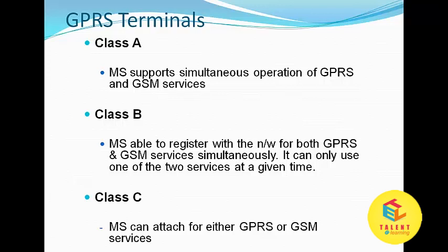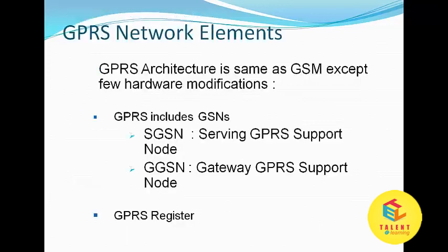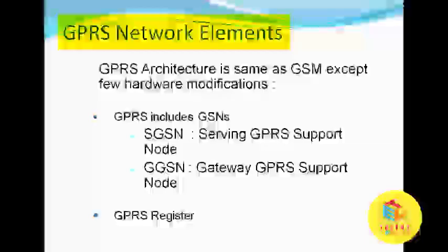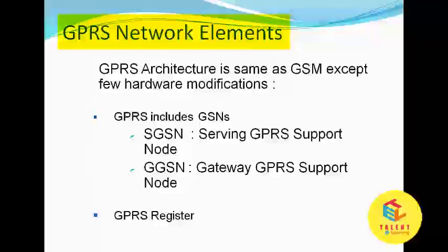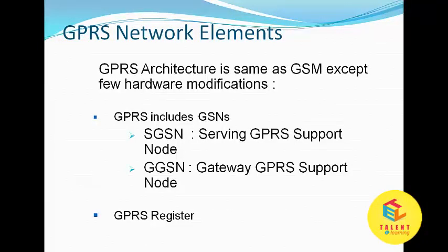Class C MS can attach for either GPRS or GSM services, but not both simultaneously. Moving on to GPRS network elements, the GPRS architecture is the same as GSM except for a few hardware modifications.